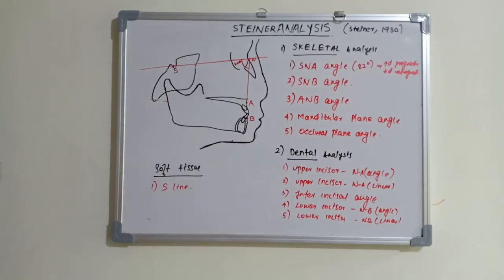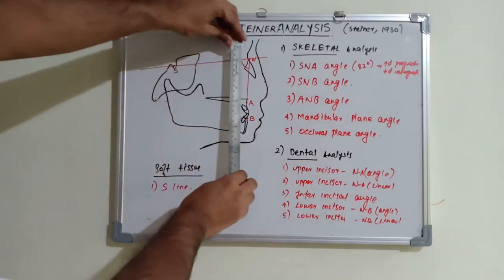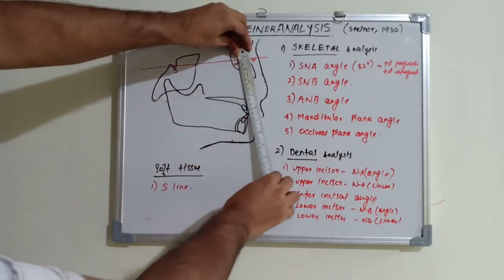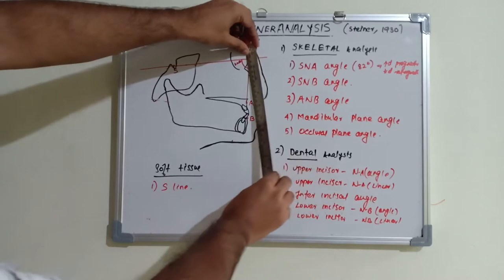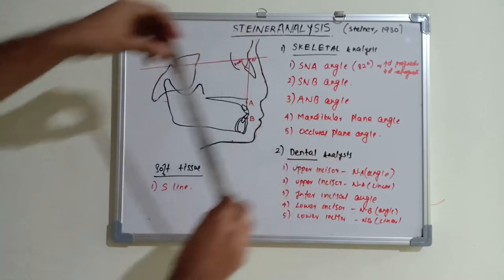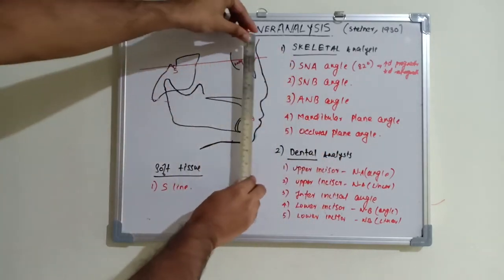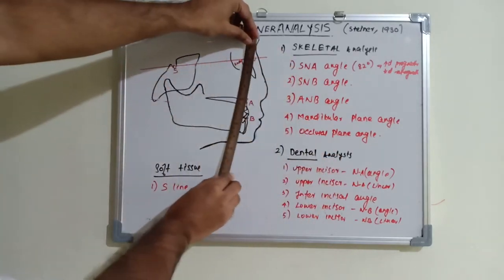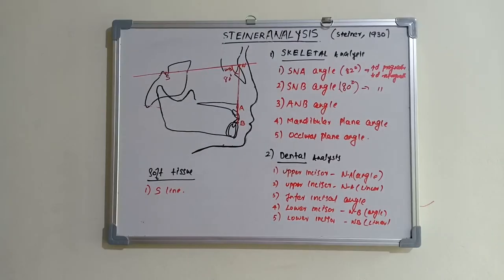The SNA angle is important because if the angle is increased, it indicates a prognathic maxilla (maxillary prognathism), and if it is decreased, it indicates retrognathism. So the angle increases in prognathic situations and decreases in retrognathism.